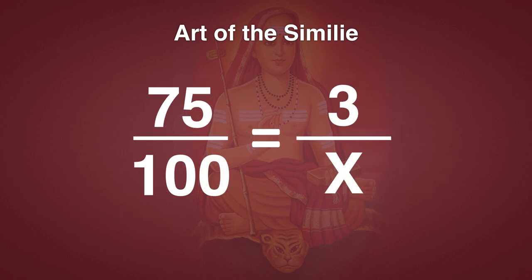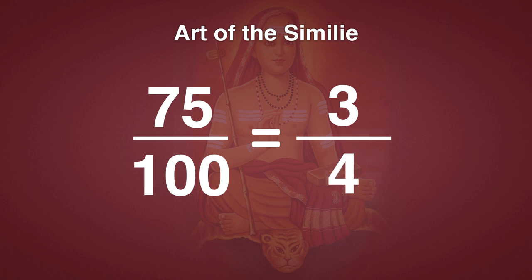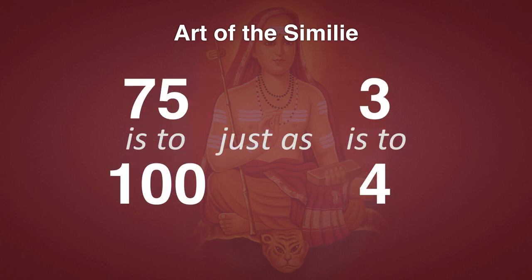You've all taken algebra, hopefully, in high school. Here's a very simple equation: 75 over 100 equals 3 over X. So here we have two things compared with one another — 75 and 100 — and we're saying that this comparison is identical to 3 over X. The solution is 3 over 4. So 75 over 100 is the same ratio as 3 to 4. Another way to say this is: 75 is to 100, just as 3 is to 4.